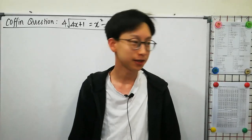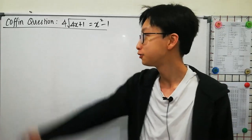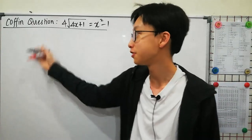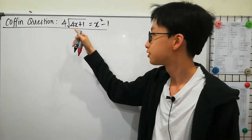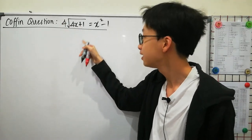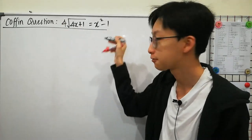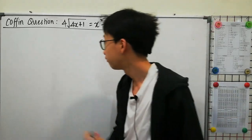Hey guys, welcome to e-max. Let's do some maths for fun. Today we are going to try some cofunction question: 4 times the square root of 4x plus 1 equals to x squared minus 1. Let me write it down for you.